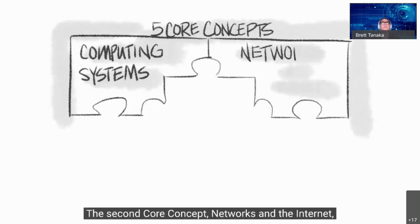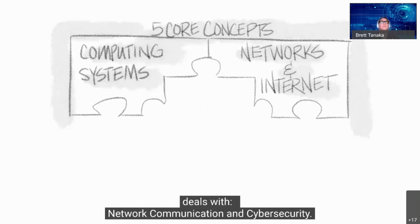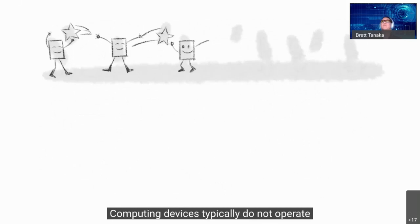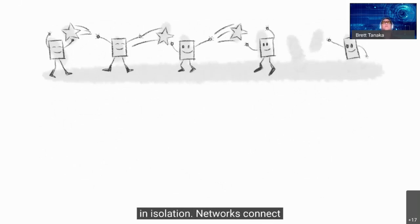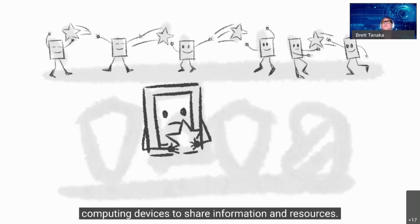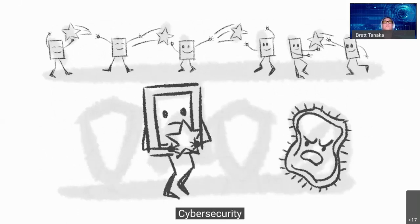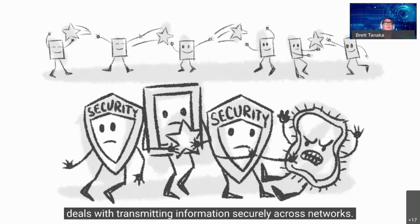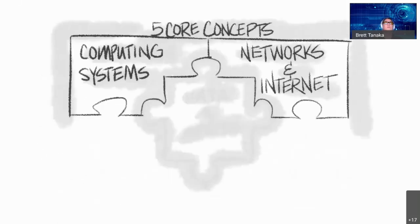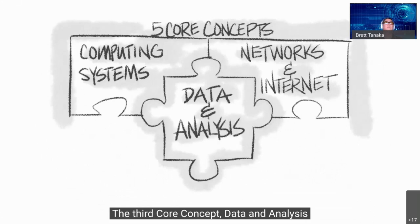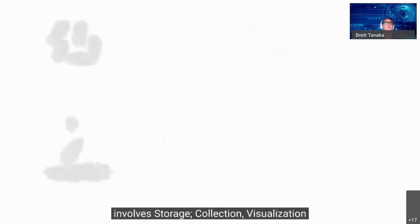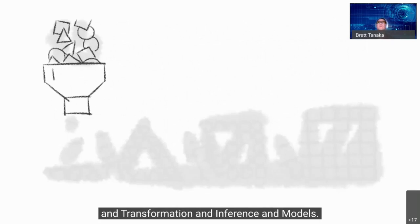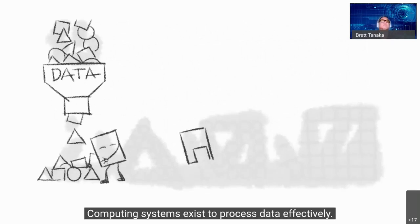The second core concept, networks and the internet, deals with network communication and cybersecurity. Computing devices typically do not operate in isolation — networks connect computing devices to share information and resources, while cybersecurity deals with transmitting information securely across networks. The third core concept, data and analysis, involves storage, collection, visualization, transformation, inference, and models. Computing systems exist to process data effectively; data is collected and stored so it can be analyzed to better understand the world.